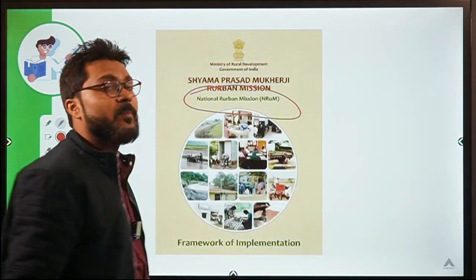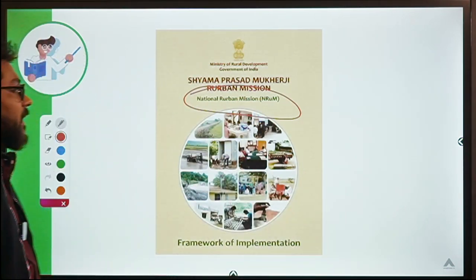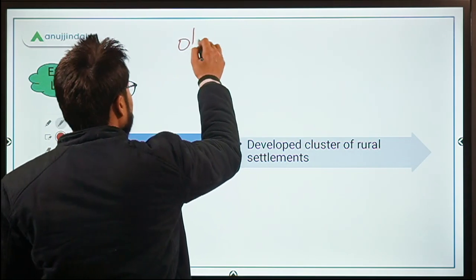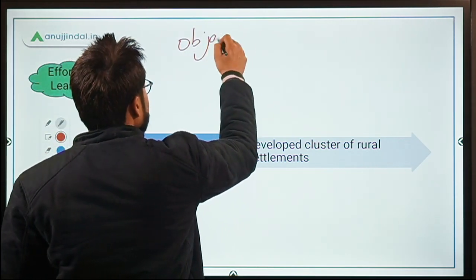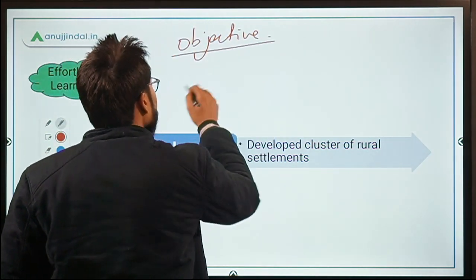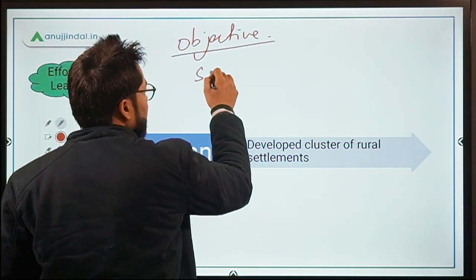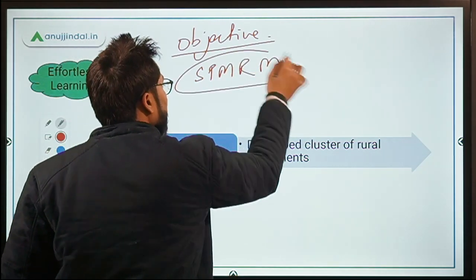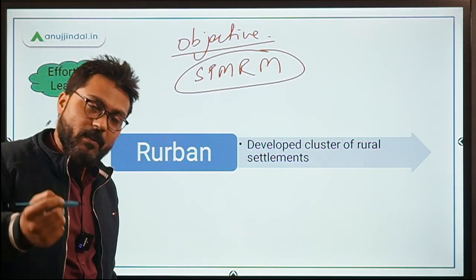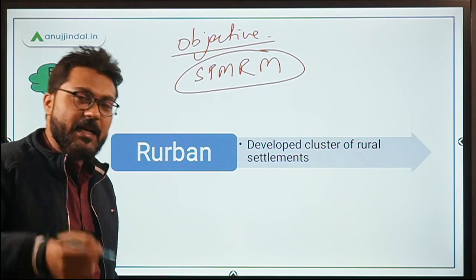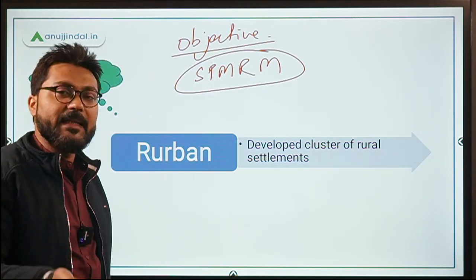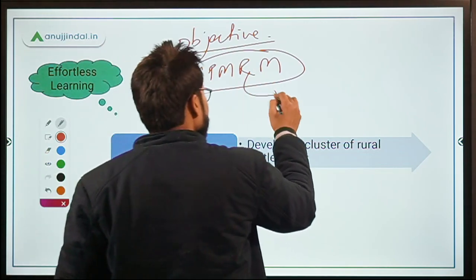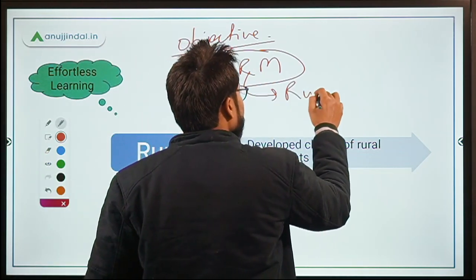Let us first try to determine the objective of the scheme. The name is Shyama Prasad Mukherjee Rurban Mission. There is one key word whose meaning we need to understand to determine the objective — and that word is 'rurban'.